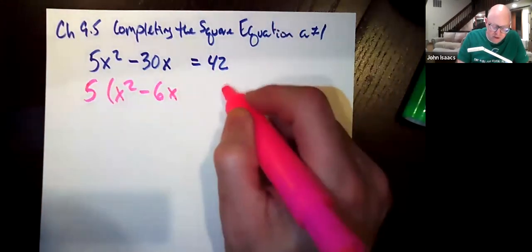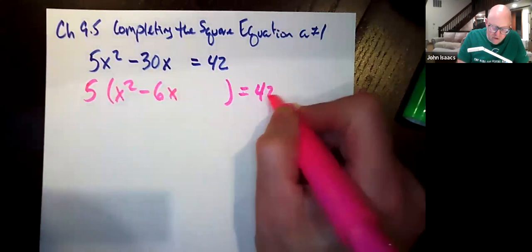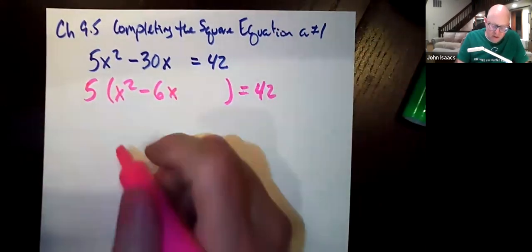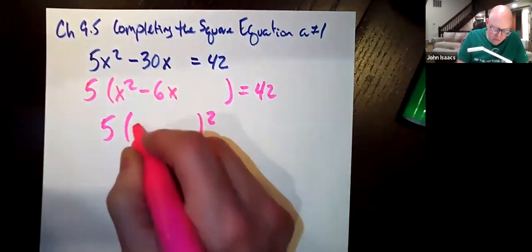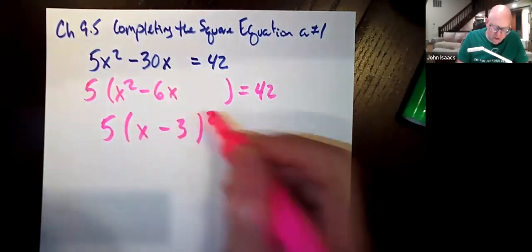And then we'll leave a space for completing the square part, and we're going to add 42. So let's see, this part here, this is going to have a 5 here, this part would be x minus 3 squared.